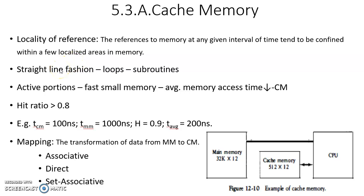This is because the CPU executes program instructions one after another in a sequential, straight-line fashion. Sometimes when executing in this fashion, if there is a loop, it will go back and execute that loop in a circular fashion. There may also be subroutines which change the program execution sequence from one memory location to another. Again at that new memory location, straight-line execution happens. At the end of subroutines, execution comes back to the main program and straight-line execution continues.